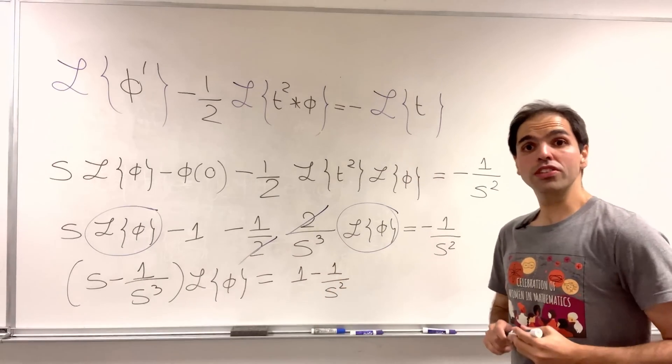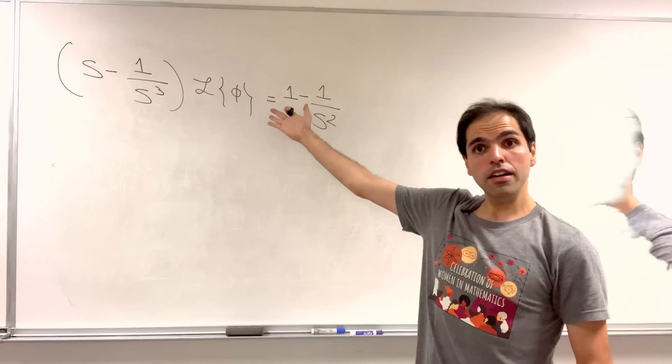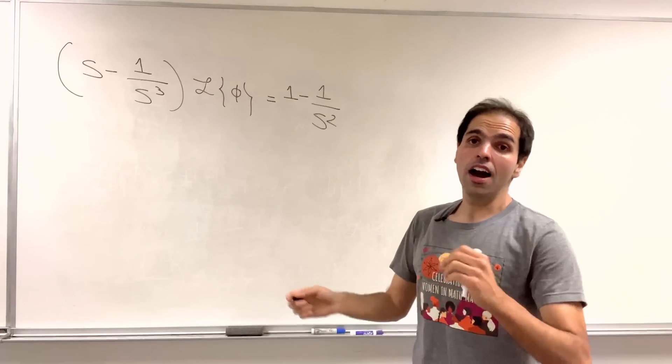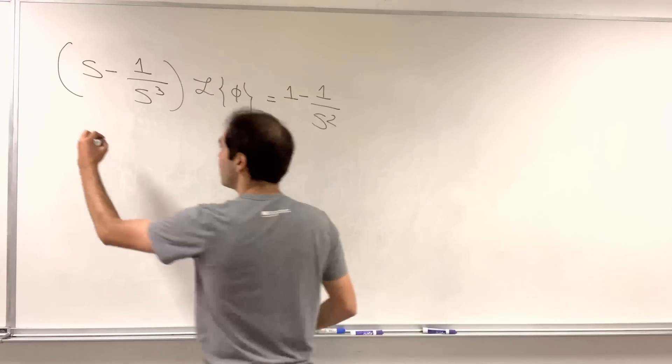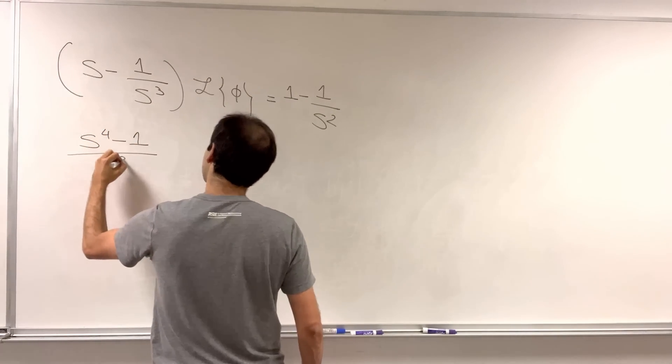And it turns out this one you can simplify tremendously, because how about we put the left-hand side and the right-hand side under a common denominator. So, what we get is s to the fourth minus one over s cubed, L of phi,